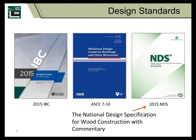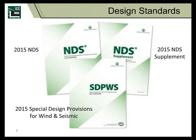The design standards that the current Codemaster is published under are the 2015 International Building Code, which adopts ASCE 7-10 for the loads on the buildings, and the 2015 National Design Specification, which is the wood industry's standard for building code provisions. The NDS actually comes bundled with three publications: the 2015 NDS itself, which covers designing beams, columns, and beam-columns for gravity loading; the Special Design Provisions for Wind and Seismic, which is a separate publication; and a supplement to the 2015 NDS that contains all the reference design values for the different species of lumber.